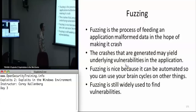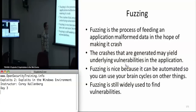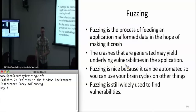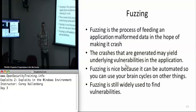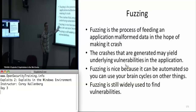As I mentioned before in Exploits 1, fuzzing is basically the process of feeding an application malformed data. You do this at a very fast rate, and it's nice because you can program a computer to do it. It's not something you have to waste your own brain cycles on. That's the real advantage of fuzzing — you can program a computer to do it. It's hard to program a computer to reverse engineer, but you can program it to just keep hammering an application with malformed data.